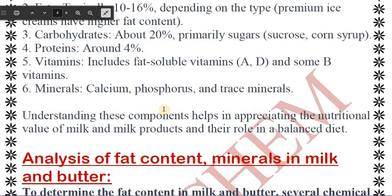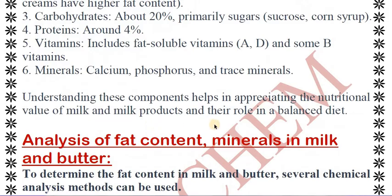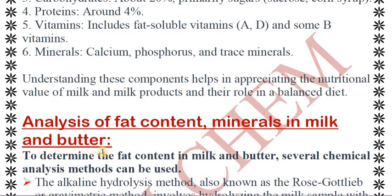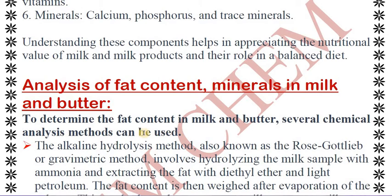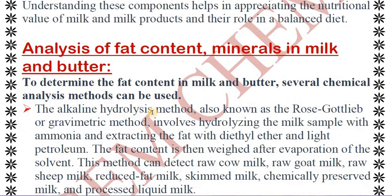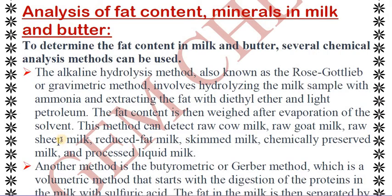The second part of our discussion is how to analyze the fat content and minerals present in milk and butter. To determine fat content, one method is the alkaline hydrolysis method, also known as the Rose-Gottlieb or gravimetric method. This involves hydrolyzing the milk sample using ammonia and then extracting the fat using diethyl ether and light petrol, allowing us to measure how much fat is present. This can detect fat content in raw cow's milk, sheep's milk, and others.